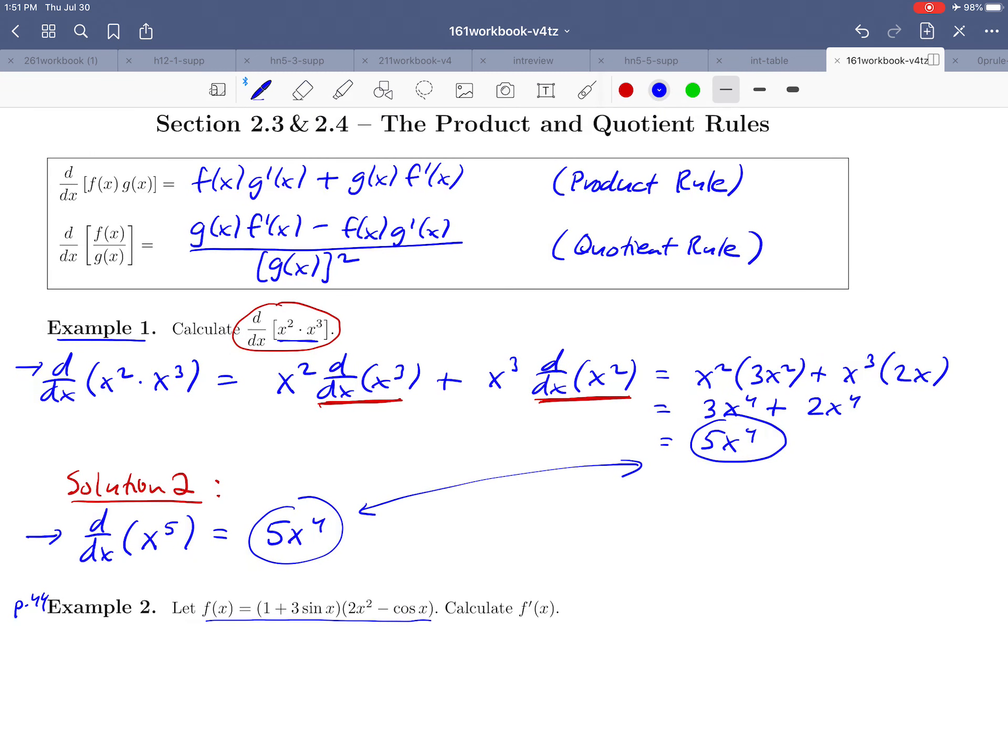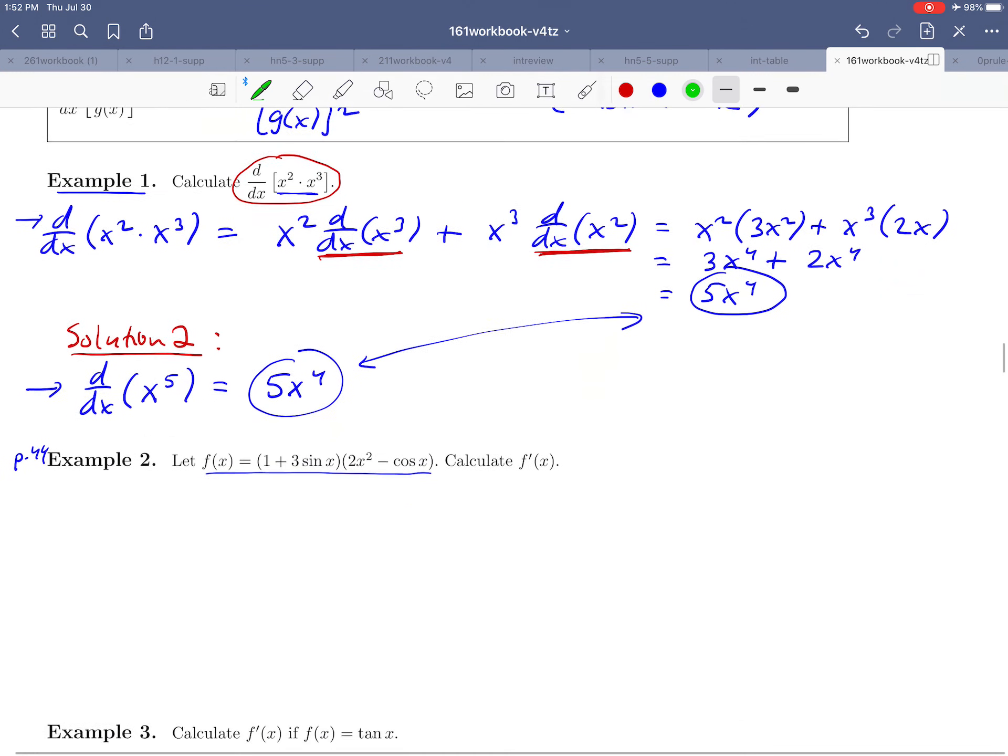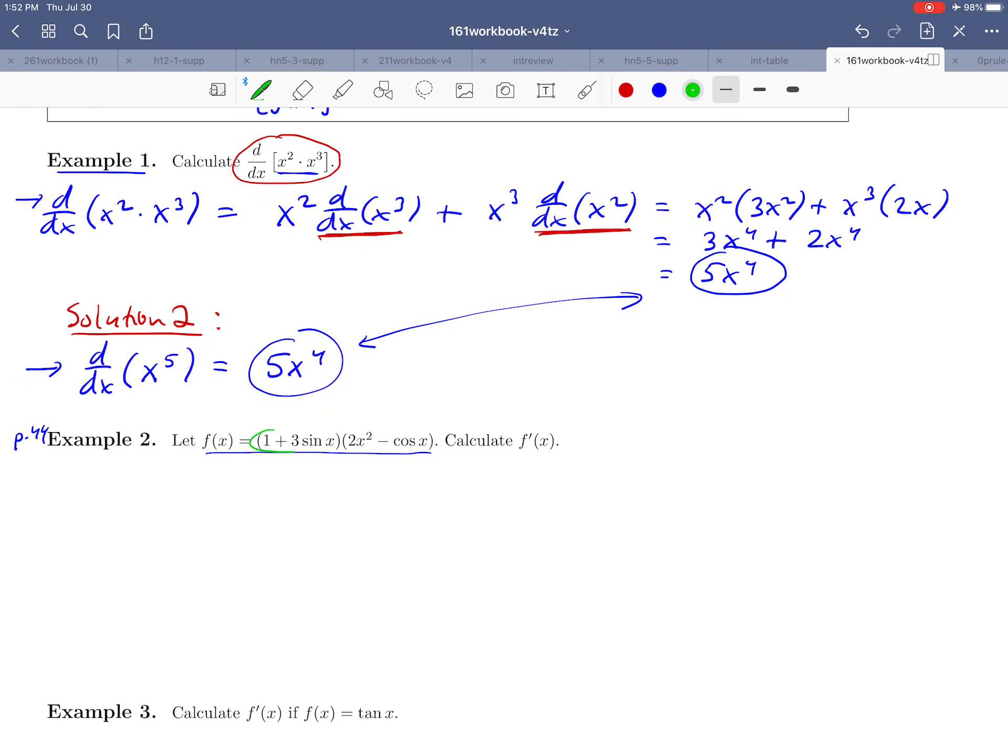If we just scroll up and take a look at it, the product rule told us that if you start with the product f(x) times g(x) and you want to take its derivative, you're going to take the first function times the derivative of the second and add it to the second function times the derivative of the first. You can see the first and the second function as being this piece times this piece in our particular function.